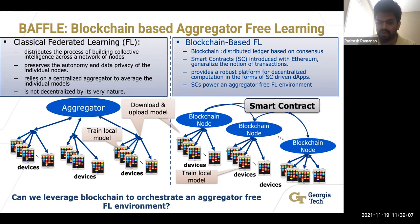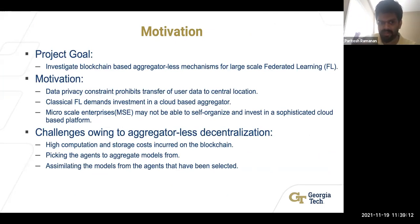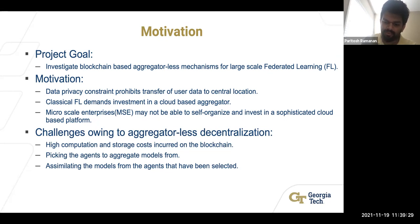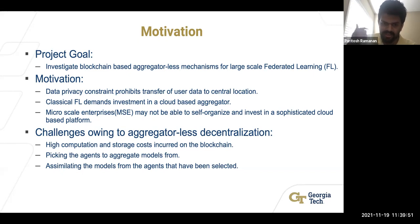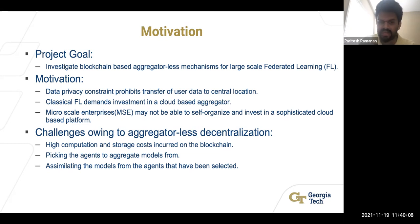The idea was to explore whether blockchain-based aggregators can deliver the same model quality as classical federated learning, using smart contracts to power the aggregator in a completely decentralized setup. Can we leverage the blockchain to orchestrate an aggregator-free environment? The challenges include high compute cost on the blockchain, picking agents to aggregate models in a decentralized setup, and how to assimilate models from selected agents.